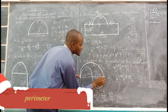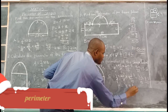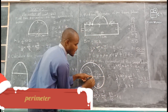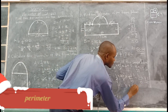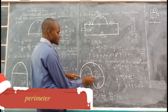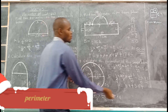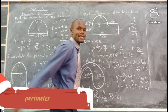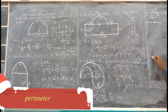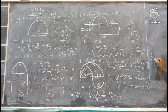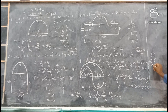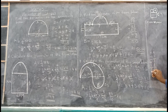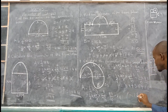So the perimeter is 8.8 plus 5.5 plus 3.3. Adding: 8.8 plus 5.5 gives 14.3; then 14.3 plus 3.3 gives 17.6. The perimeter becomes 17.6 meters.